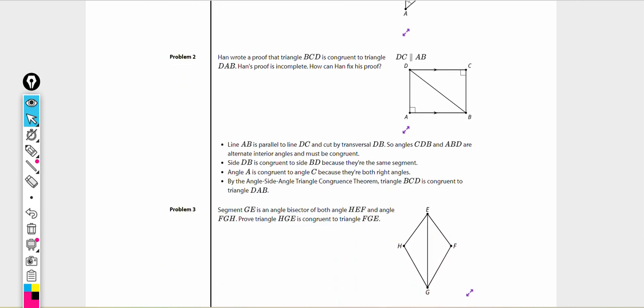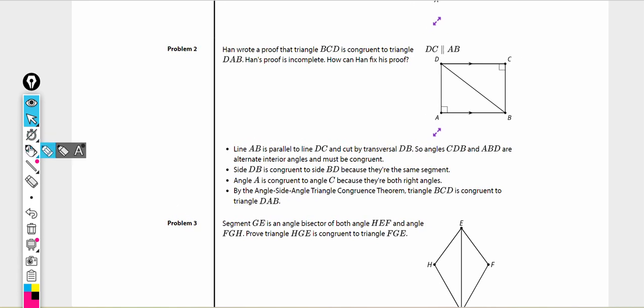Problem number two. Han wrote a proof that triangle BCD is congruent to triangle DAB. How can Han fix his proof? Let's look at our diagram first. We have DC is parallel to AB. Whenever I have parallel lines, I always like to extend them, especially in proofs about triangles, because if you see your parallel lines, we generally have a hidden transversal floating in there.